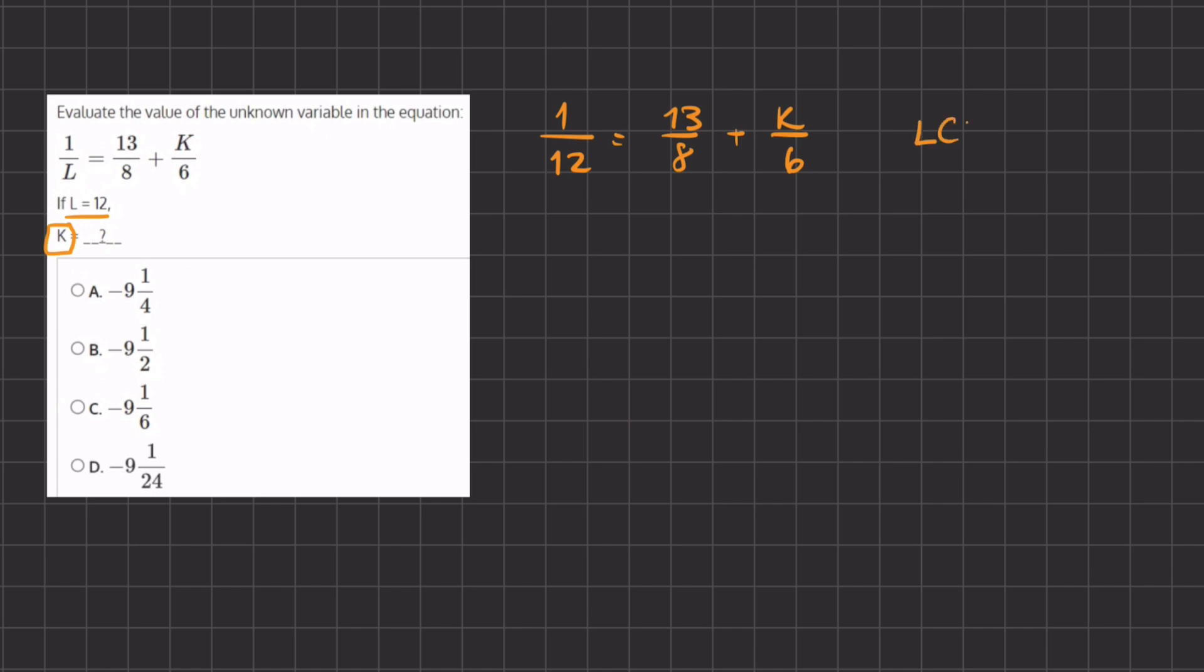In this case, the LCD is going to be 24. So we are going to multiply this entire expression by 24 in order to get rid of the denominators.